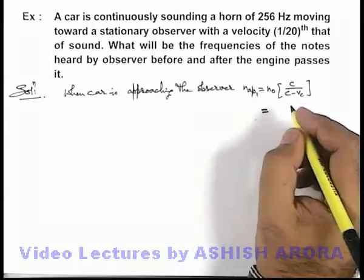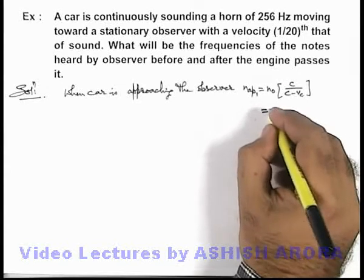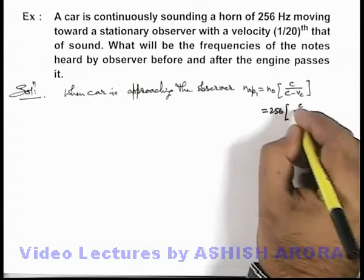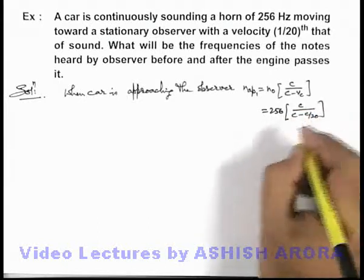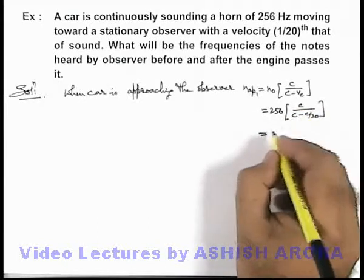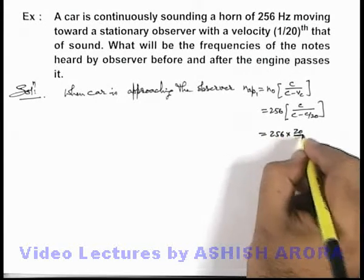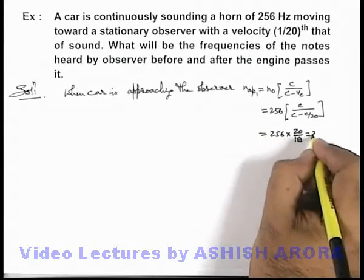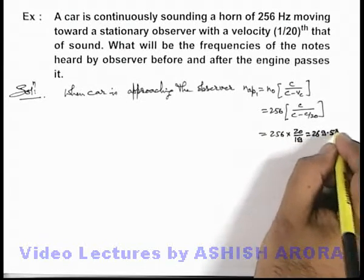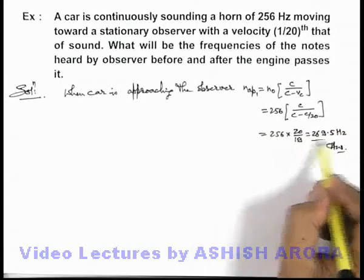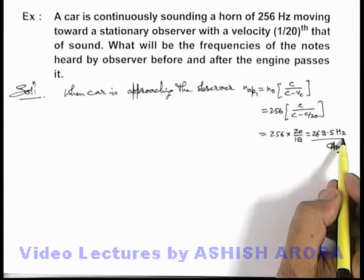On substituting the values, we can write that the sound frequency is 256 × c/(c - c/20). On substituting the values, this is 256 × 20/19, which is 269.5 Hz. That'll be one answer to the problem or the frequency which the observer will hear when the car is approaching.